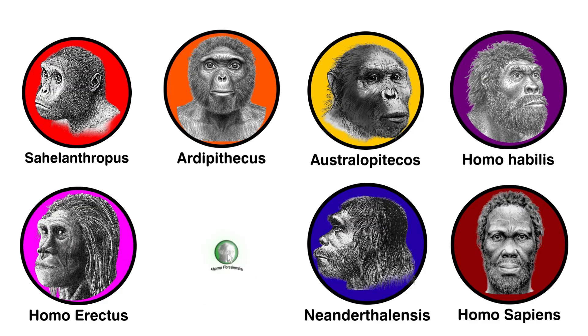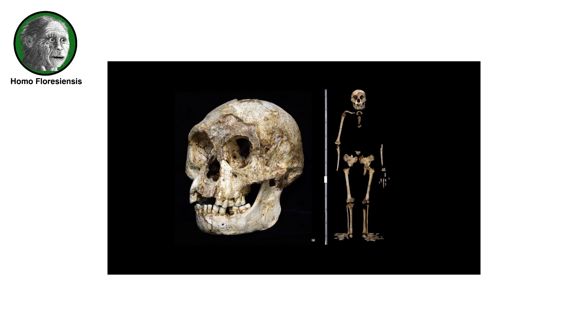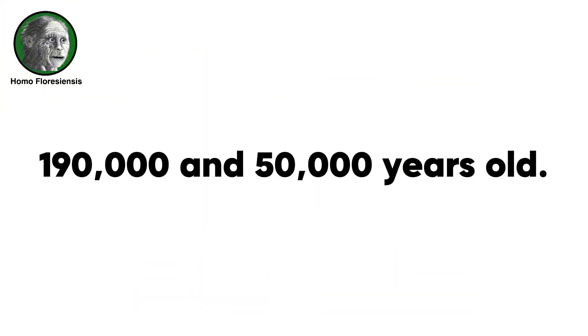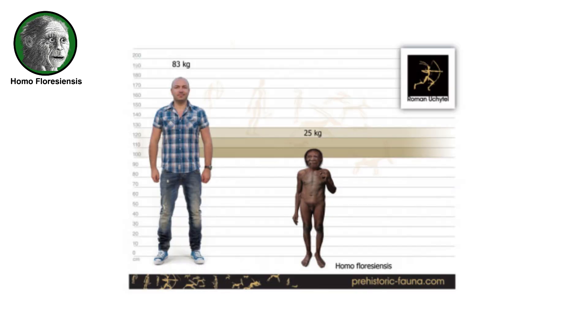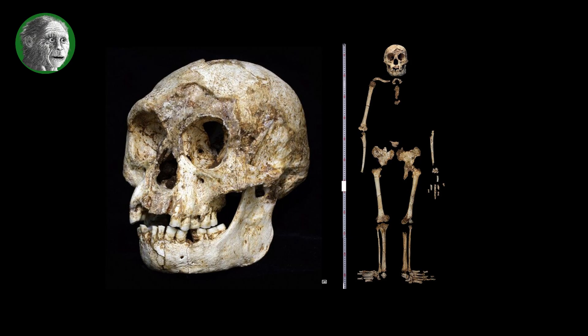Homo floresiensis remains one of the most recently discovered early human species. The fossils of H. floresiensis date to between about 100,000 and 60,000 years ago, and stone tools made by this species date to between about 190,000 and 50,000 years old. Homo floresiensis individuals stood approximately three feet six inches tall, had tiny brains, large teeth for their small size, shrugged forward shoulders, no chins, receding foreheads, and relatively large feet due to their short legs.